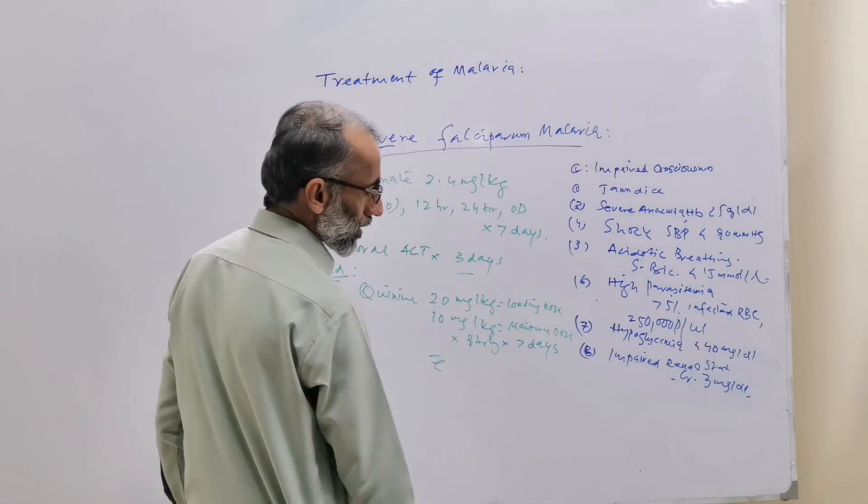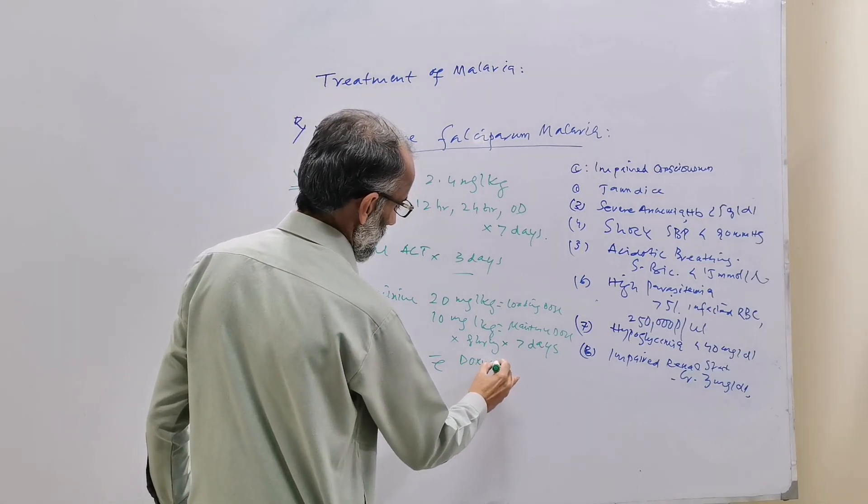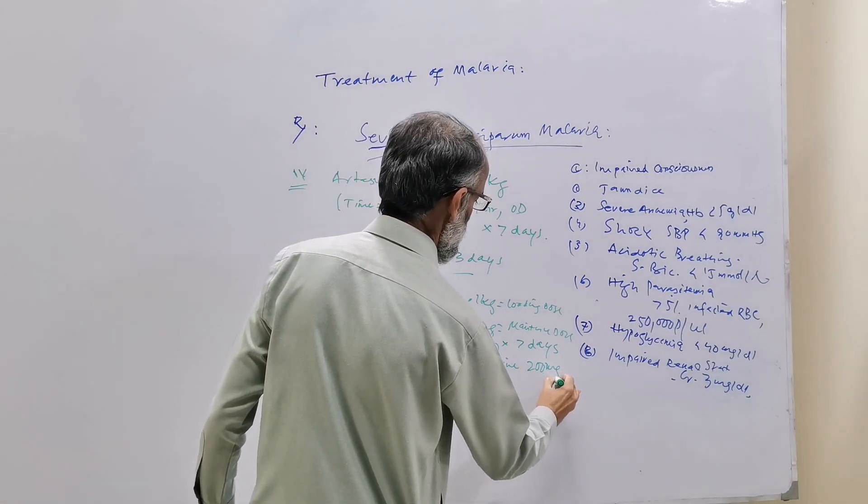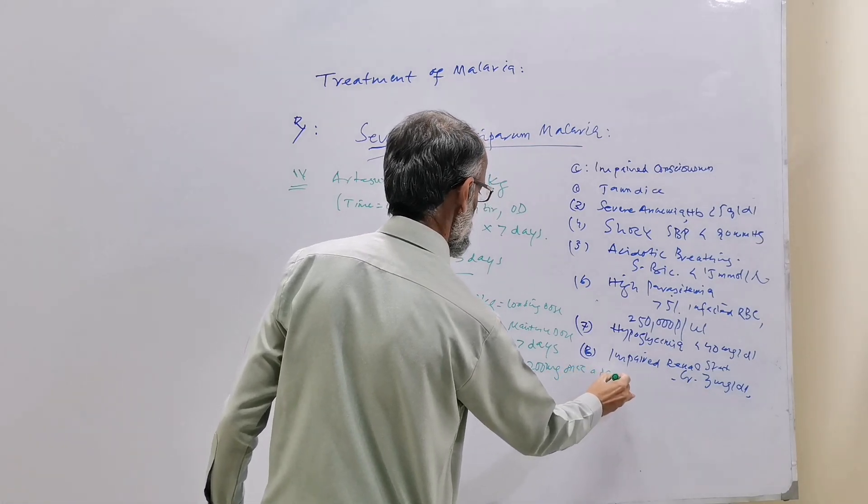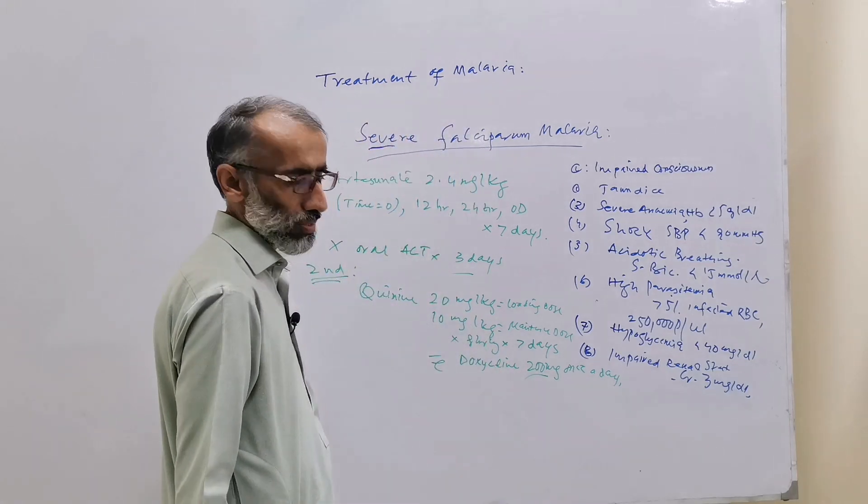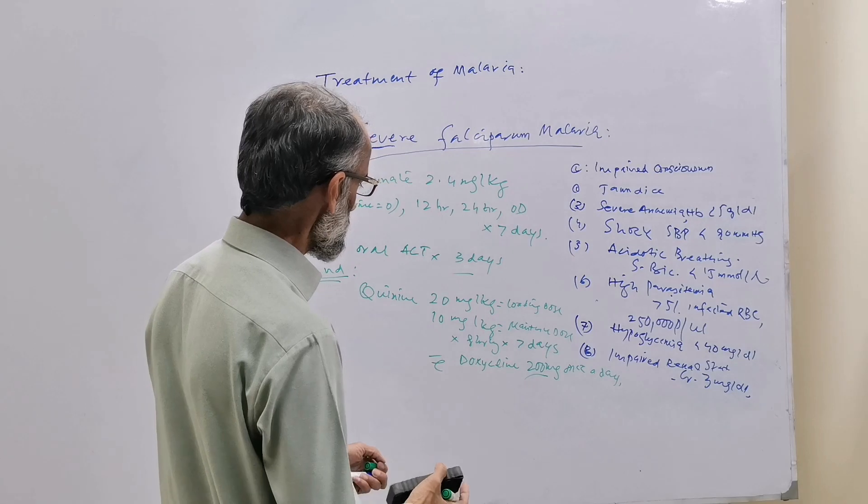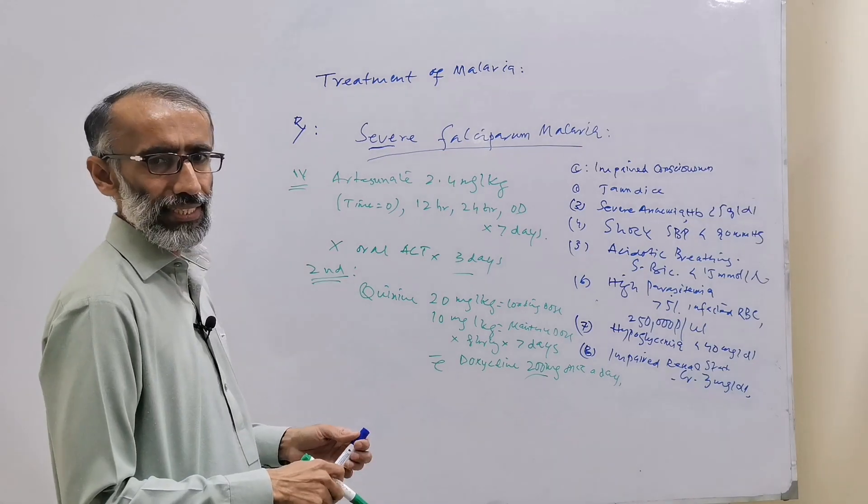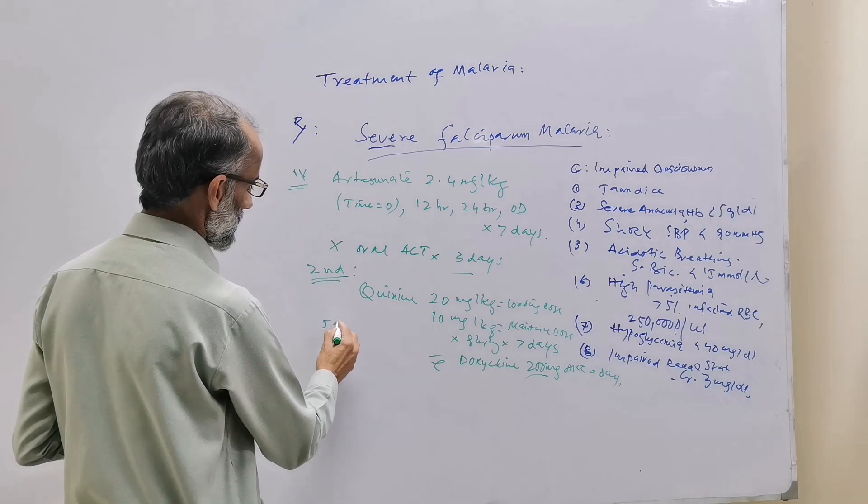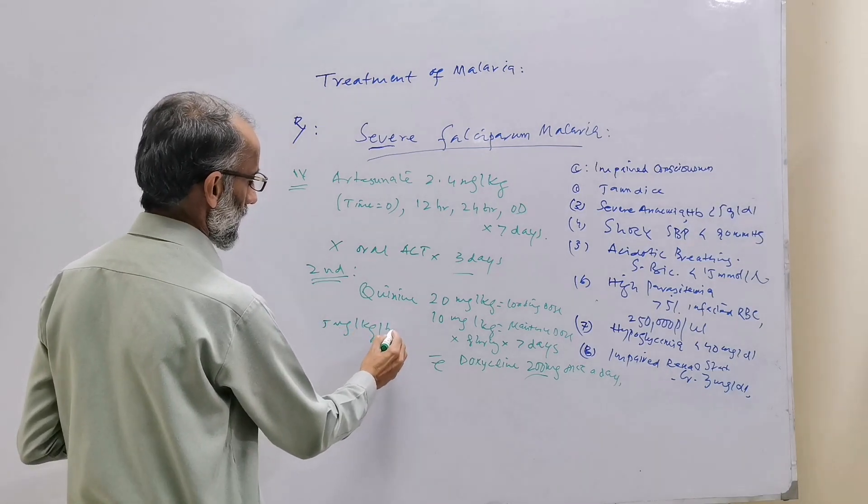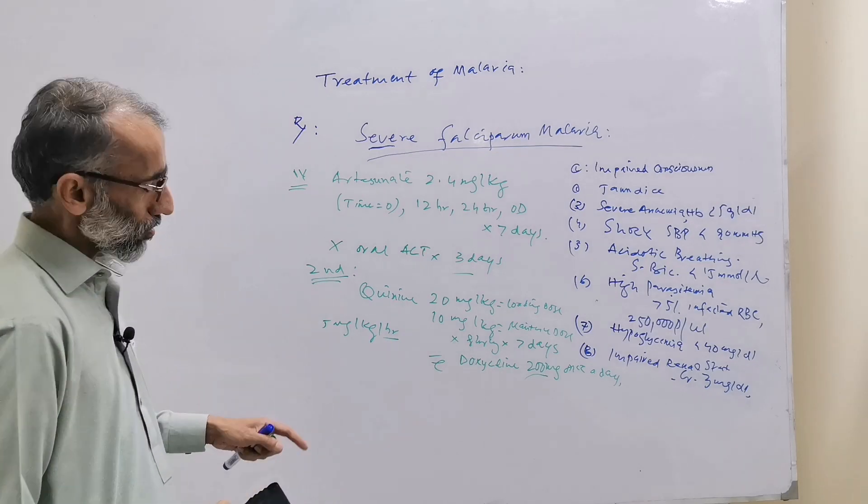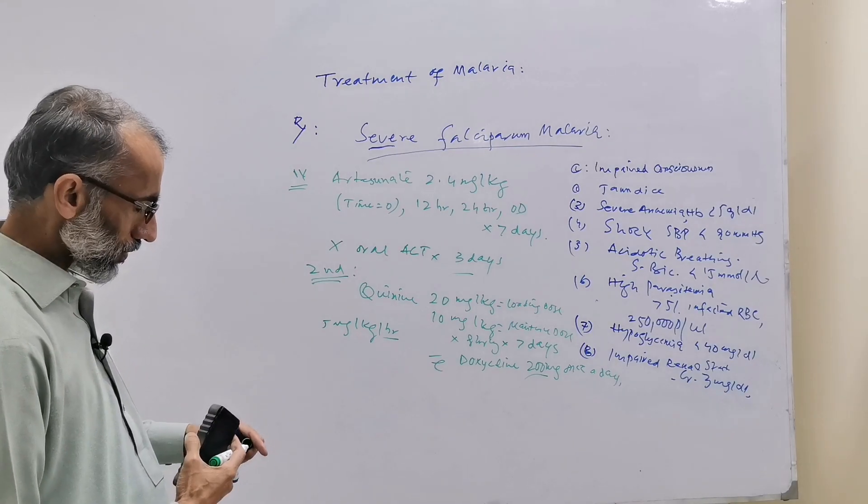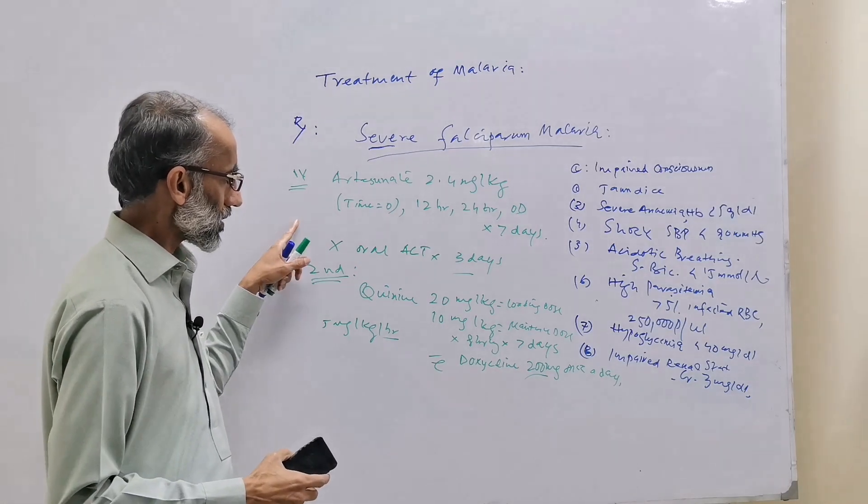With combination Doxycycline 200 once a day or 100 milligram twice a day. The infusion rate should not exceed 5 milligram per kg per hour to minimize the side effects of parenteral Quinine.